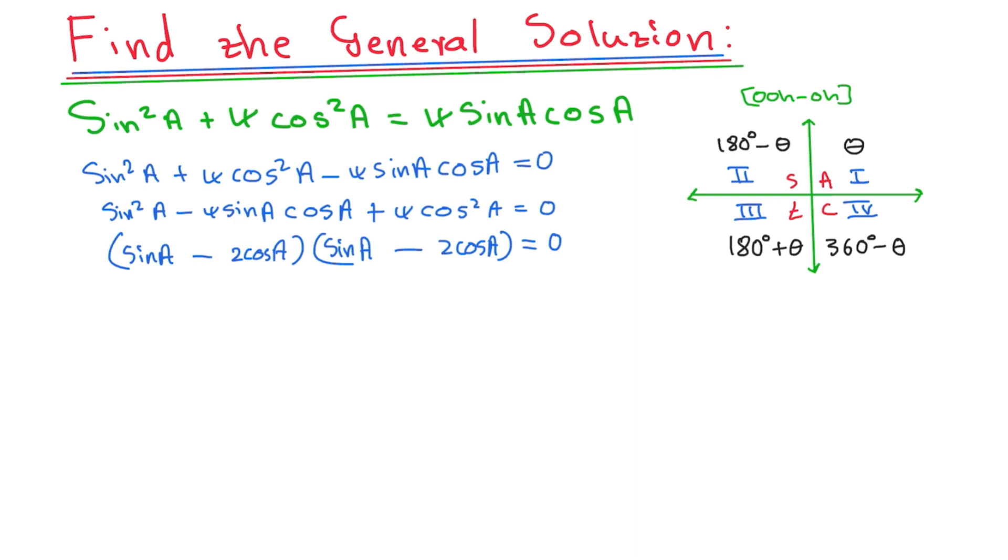So as we continue, we're going to say zero factor theorem. So I'm going to say I have sin A minus 2 cos A is equals to 0 or sin A minus 2 cos A equals to 0. This is the same thing, guys. So I can basically just say, therefore, remember, I'll make my sin A the subject of the formula transposed. I'll have sin A is equals to 2 cos A.